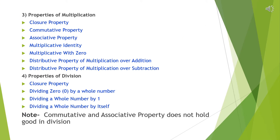Properties of multiplication. In multiplication, we can satisfy seven properties: first, closure property; second, commutative property; third, associative property; fourth, multiplicative identity; fifth, multiplicative property of zero; sixth, distributive property of multiplication over addition; and last, distributive property of multiplication over subtraction. Fourth, properties of division: first, closure property; second, dividing zero by a whole number; third, dividing a whole number by one; fourth, dividing a whole number by itself. Note that commutative and associative property doesn't hold good in division also.